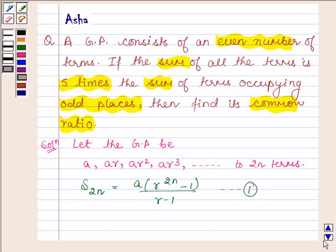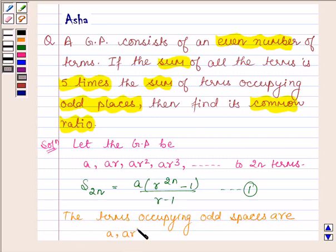And now let us find the sum of terms occupying odd spaces. The terms occupying odd spaces are A, AR², AR⁴, and so on up to N terms.